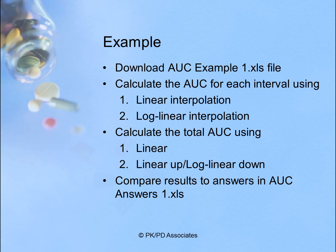Here is an example for you to work. You can download the AUC example 1.xls file — it's an Excel file. Calculate the AUC for each interval using linear interpolation and log-linear interpolation, then calculate the total AUC using the linear method and the linear up / log down method. In the next lecture we'll walk through it, and you can compare your answers to the AUC Answers 1 Excel file that will be included.